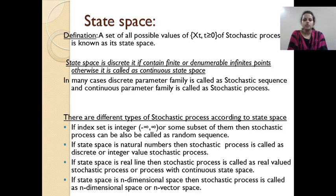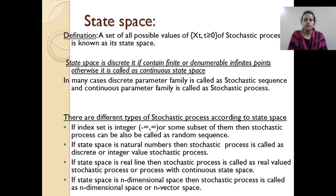There are different types of stochastic processes according to the state space, and we give different names accordingly. If the range of state space is minus infinity to infinity, it is called a random sequence. If the state space is the natural numbers, the stochastic process is an integer-valued stochastic process. If the state space is the real line, it is called a continuous state space or real-valued stochastic process. If the state space is n-dimensional, it is called an n-dimensional stochastic process or n-vector space.